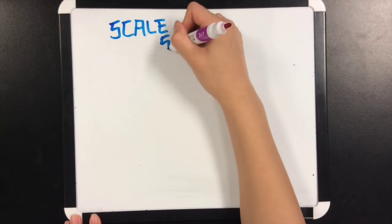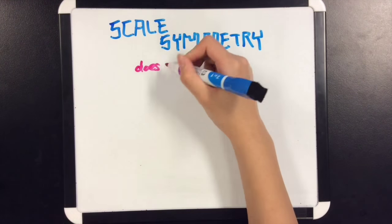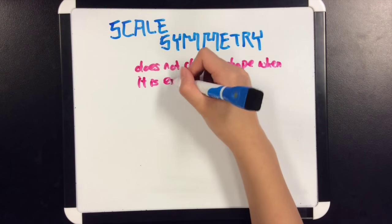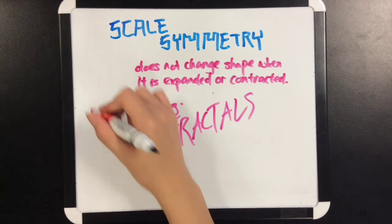And scale symmetry does not change shape when it is expanded or contracted, for example, fractals.